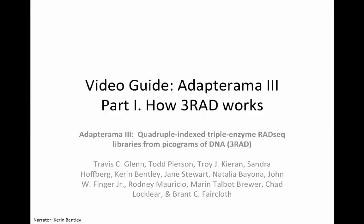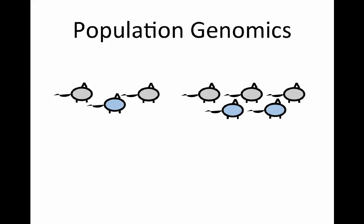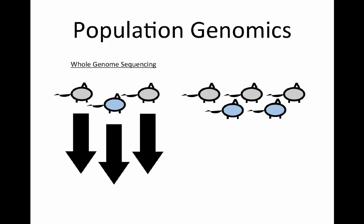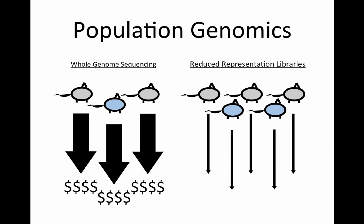Welcome to the Adapterama 3 video series on 3RAD. In this video, we explain how Adapterama has been crafted to produce high-quality RADseq data and provide flexible barcoding to meet many experimental design needs. In population genomics, the general goal of most projects involving next-generation sequencing is to be able to compare DNA sequences of multiple individuals so that we can understand evolutionary processes of interest.